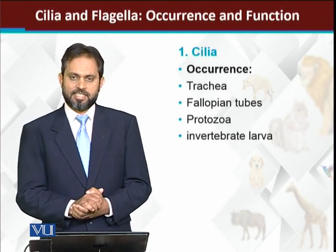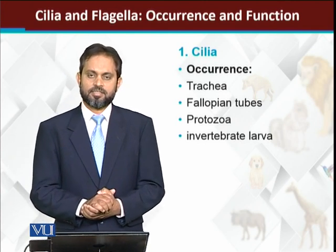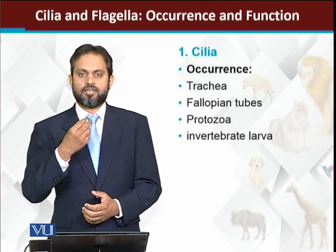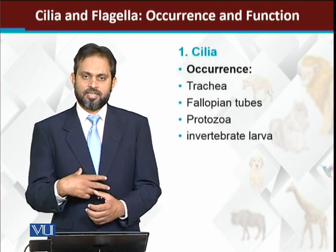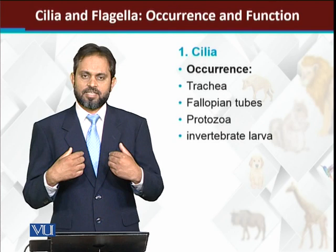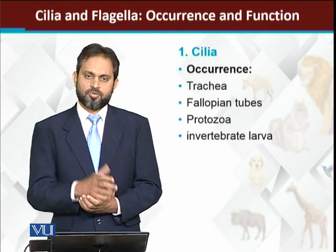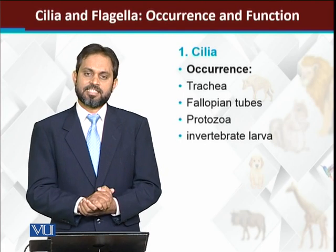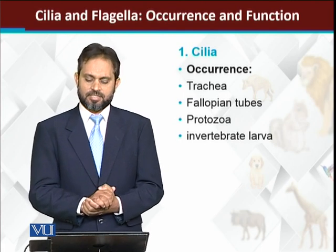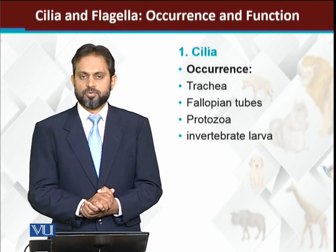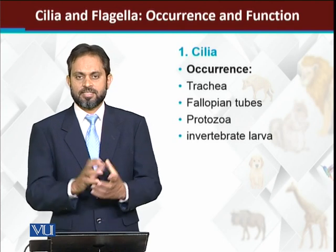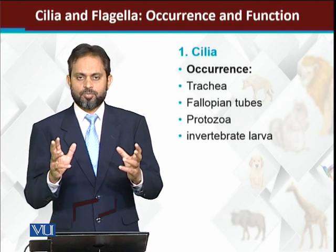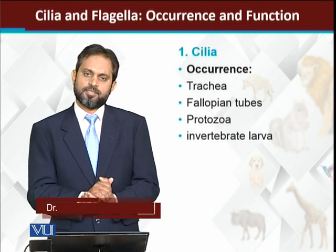Looking at cilia generally, cilia are present in our trachea, which is the windpipe — the air pipe connected to the lungs. They are also present in the fallopian tubes, basically the female reproductive system, which is used to transport material toward the uterus.